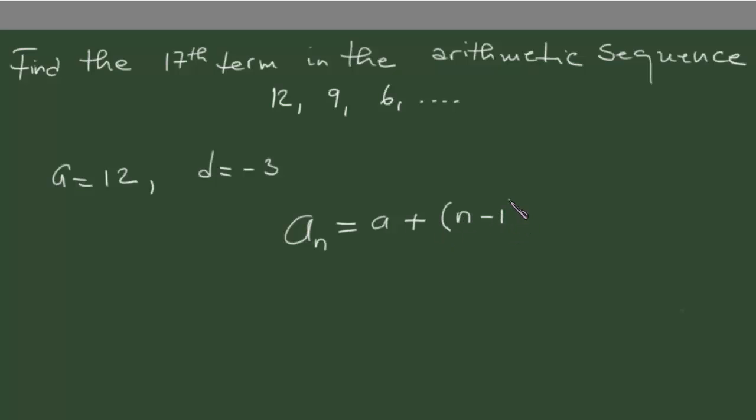So we're gonna replace n here by 17 because this is what we're looking for. So this will give us a_17 equals 12 plus 17 minus 1 is 16, times minus 3.